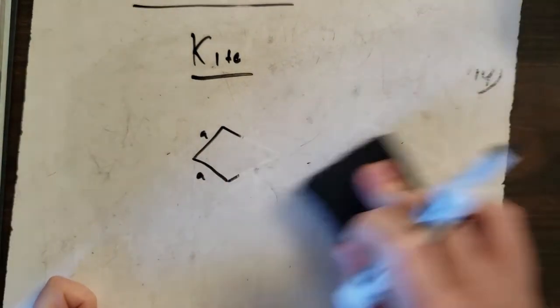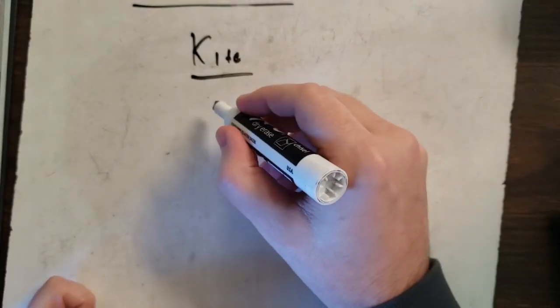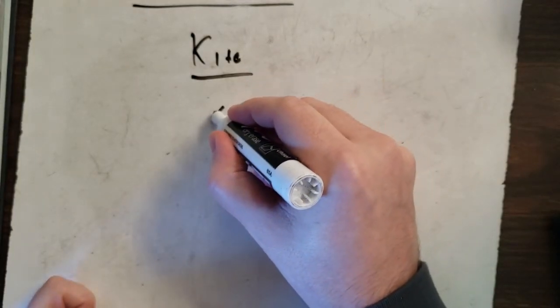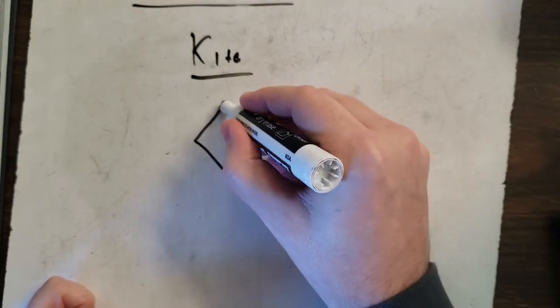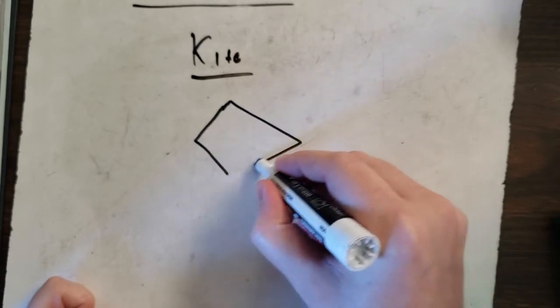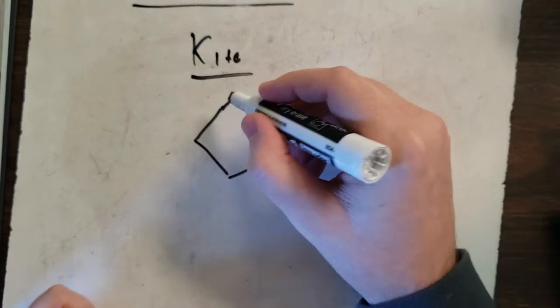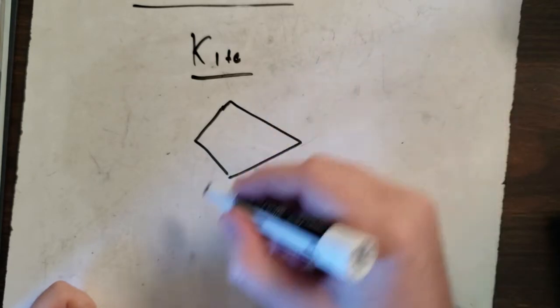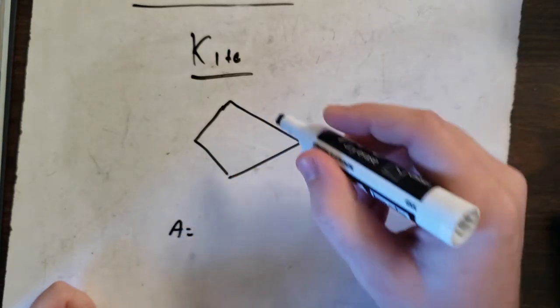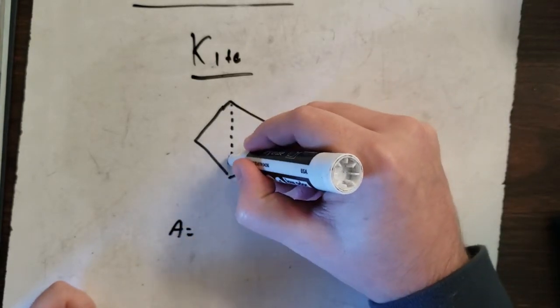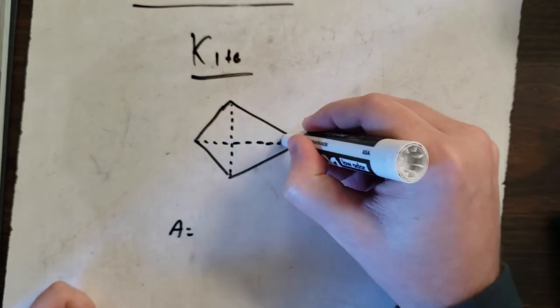Now, area. Area is a formula. When you get area, it'll give you this. This is for area. It'll give you this.